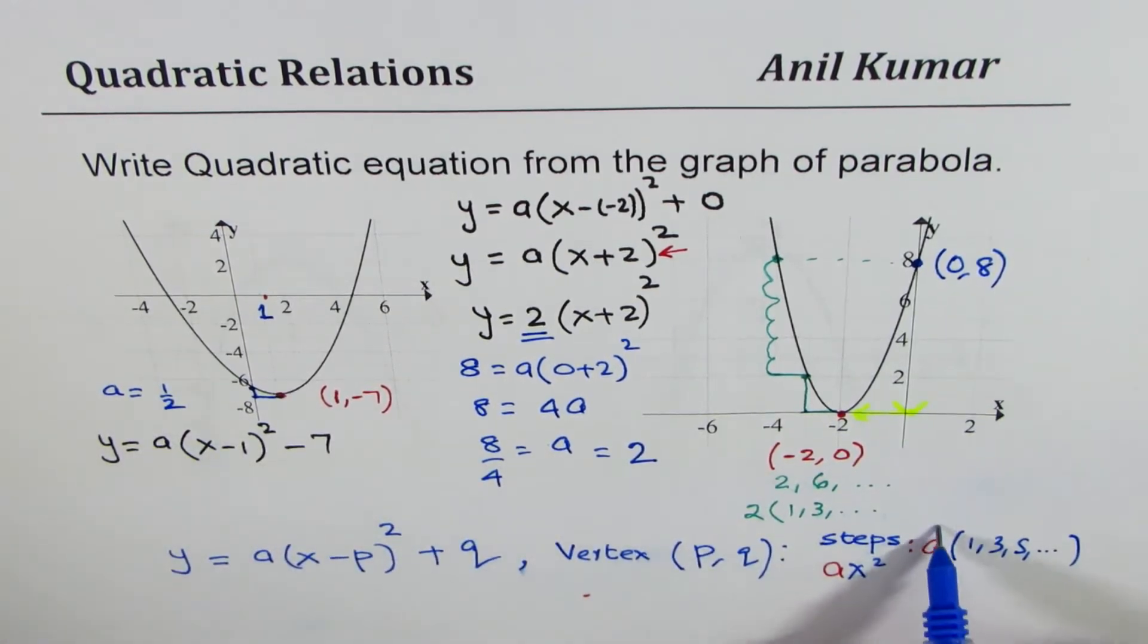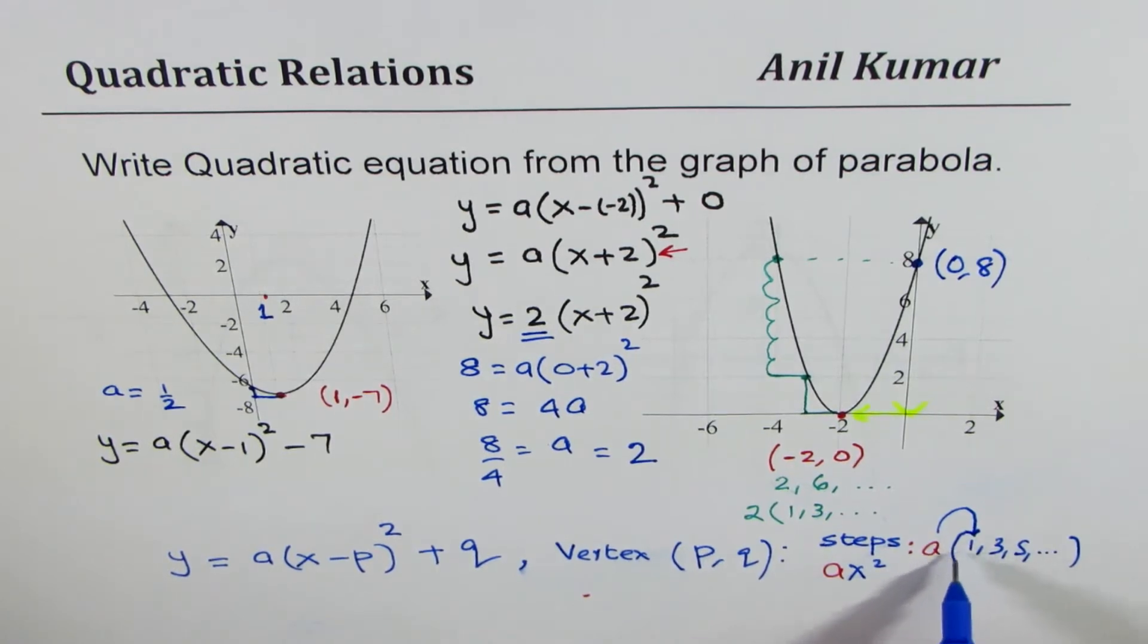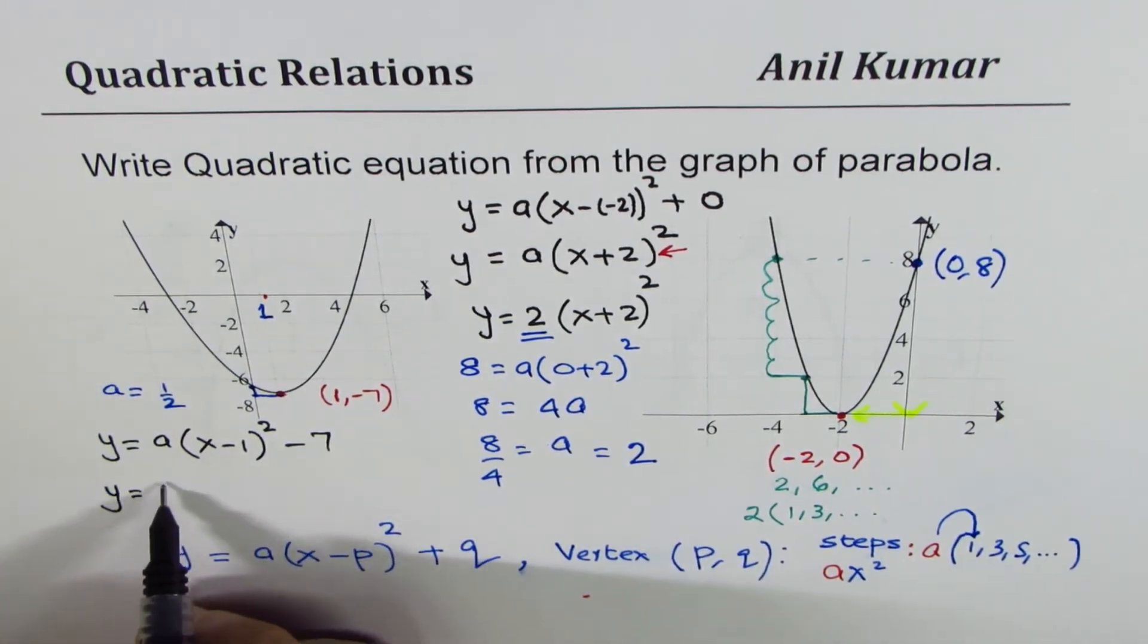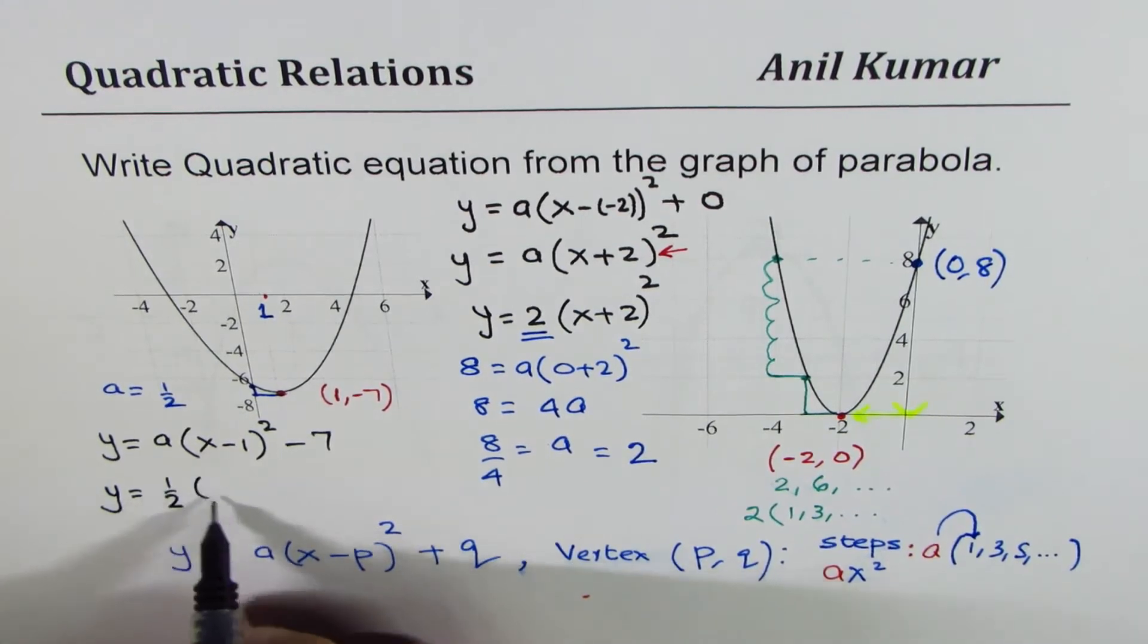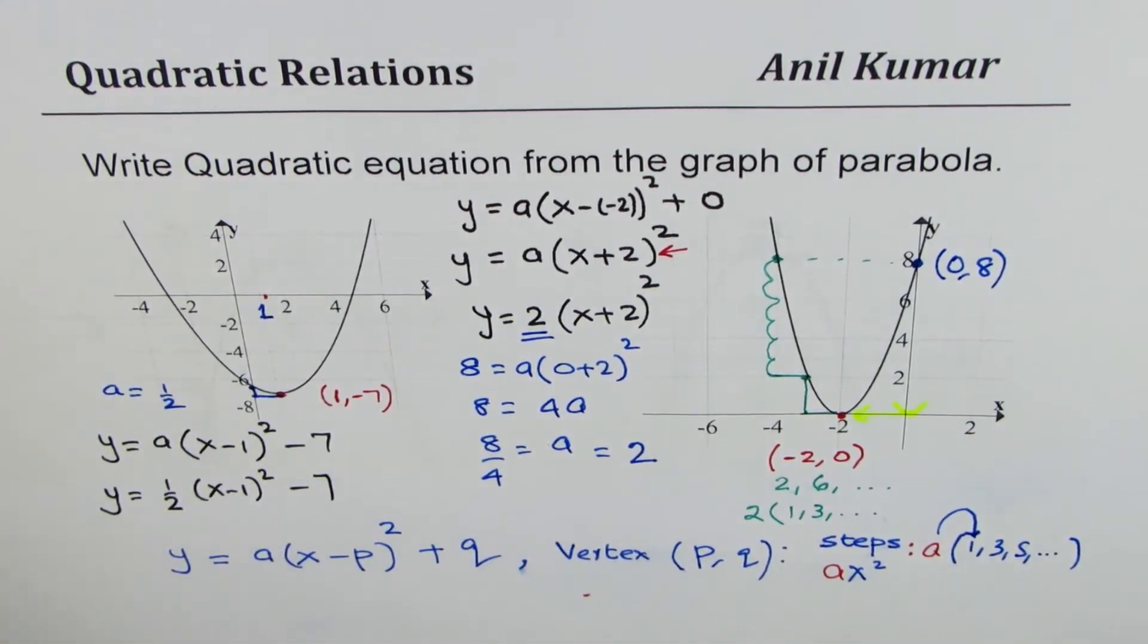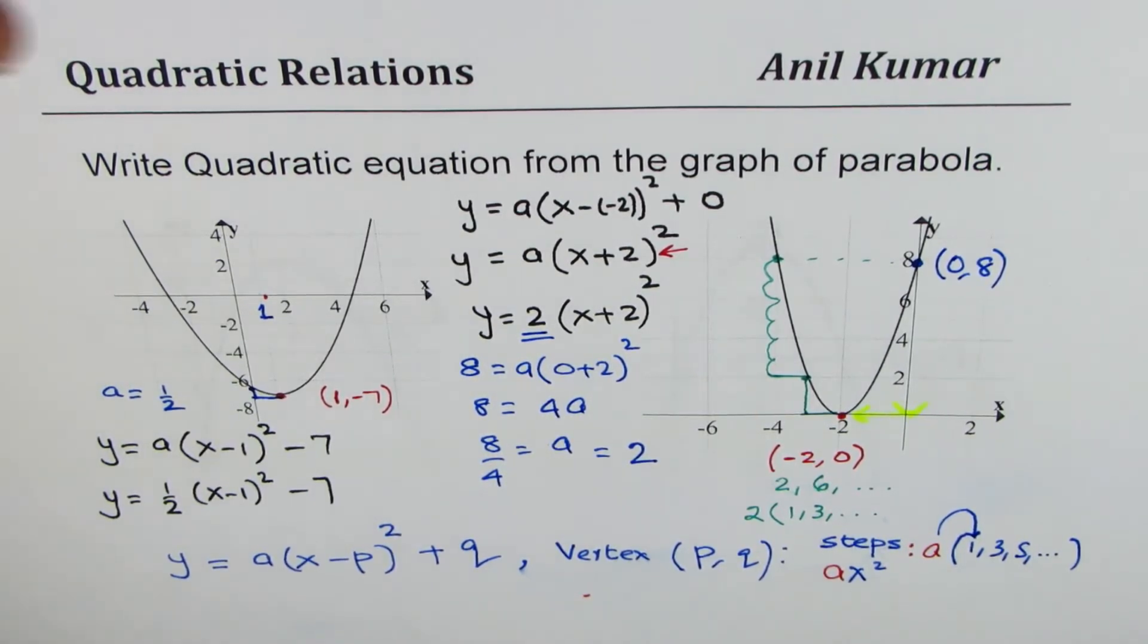And therefore a is half. So a is the value which multiplies into the first step, in this case it is half. And therefore we can straight away write down our answer as y equals to half x minus 1 whole square minus 7.